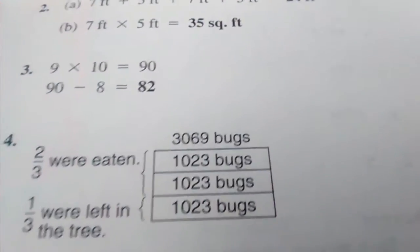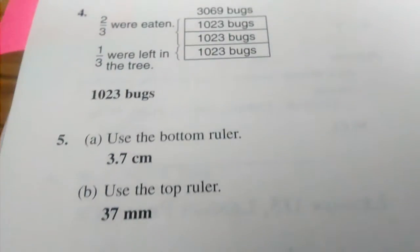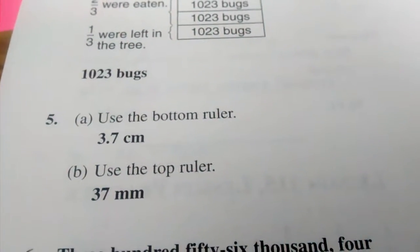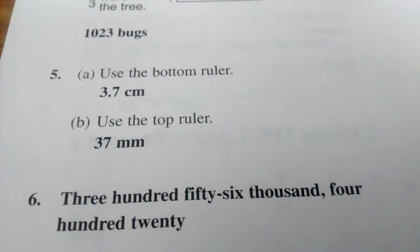Number 3, 82. Number 4, take a look at the picture. Number 5, A: 3.7 centimeters, B: 37 millimeters.